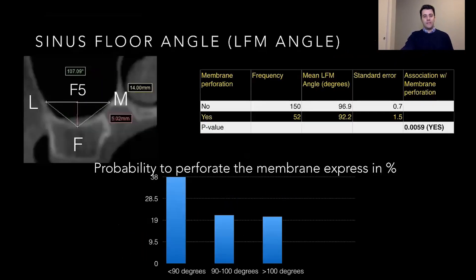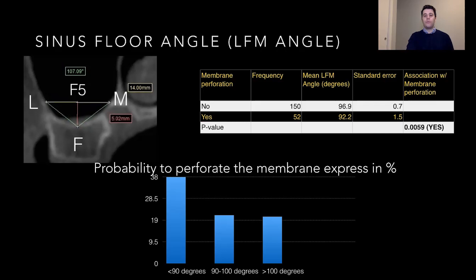The angle of the maxillary sinus floor is measured at 5 millimeters height from the sinus floor, using two points L and M on the lateral and medial walls, and F for the floor of the sinus. When this angle is wide, the distance between the walls is larger. When the angle is narrow, the distance is closer, and the narrower the angle, the more difficult the elevation and the more prone it is to perforation.